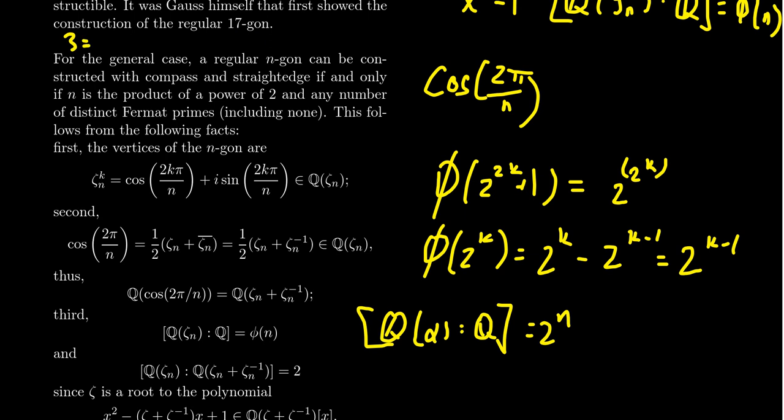Notice the Fermat primes. You have 3, which is 2 plus 1. You have the next one, 5, which is 4 plus 1. Notice here we're just taking a power of 2 plus 1. The next one, 8 plus 1, is not prime. That's 9. Then you take 16 plus 1. That's 17. That's a Fermat prime.